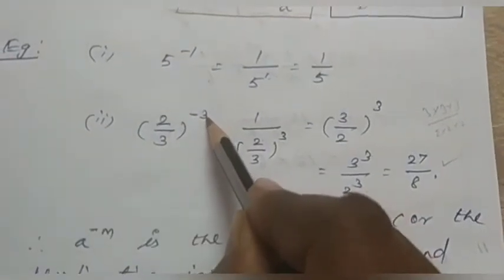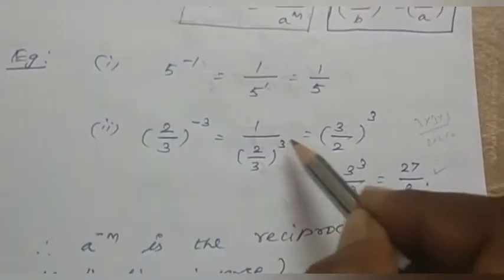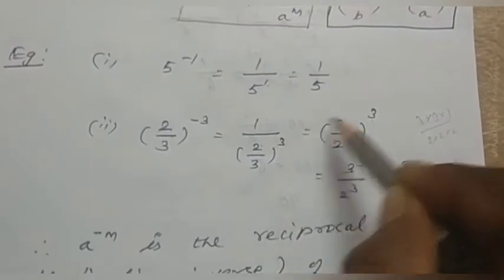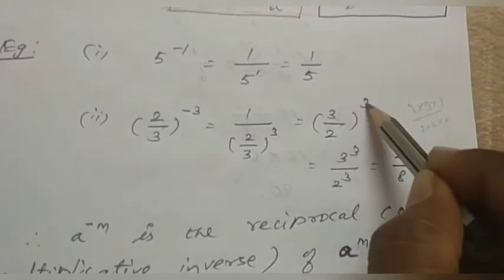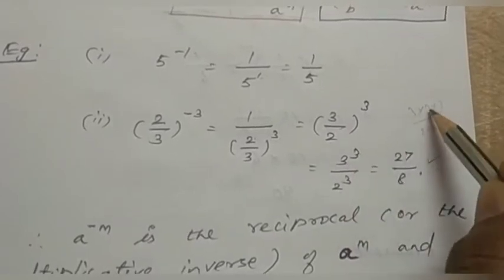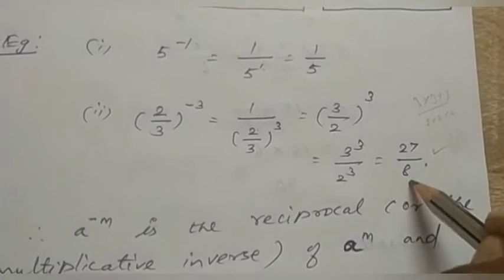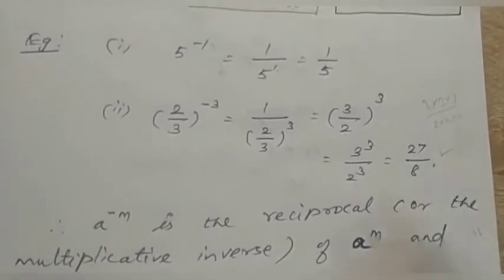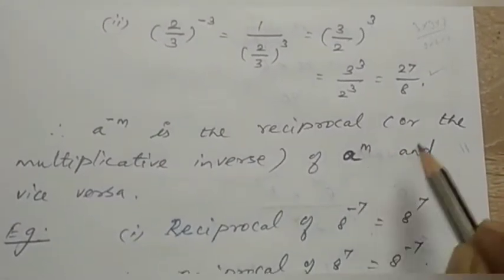The second example: 2 by 3 whole power minus 3 equals 1 divided by 2 by 3 whole power 3, which gives 3 by 2 whole power 3. Expanding: 3 power 3 means 3 multiplied 3 times — 3 threes are 9, 9 threes are 27. 2 power 3 means 2 multiplied 3 times — 2 twos are 4, 4 twos are 8. So the answer is 27 divided by 8. Note: a power minus m is the reciprocal of a power m and vice versa.